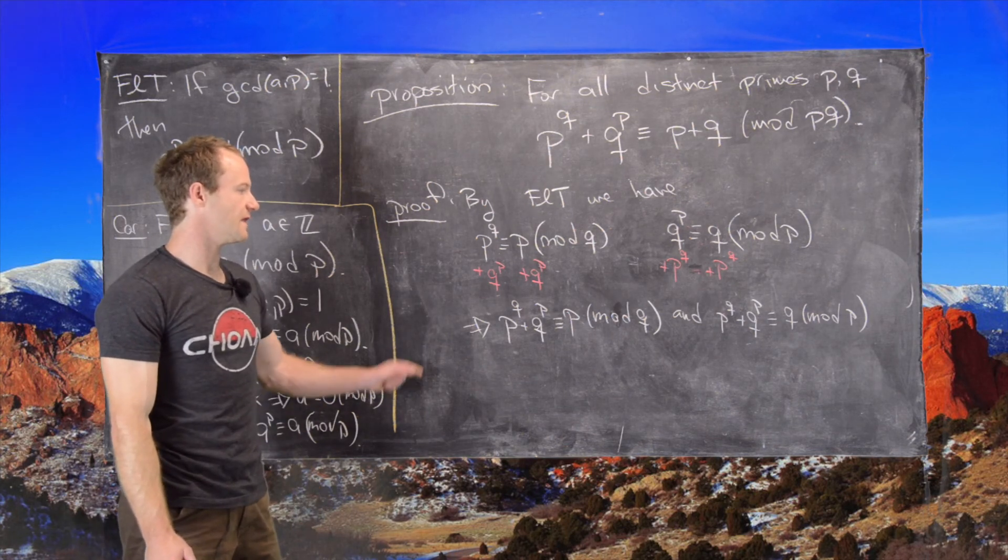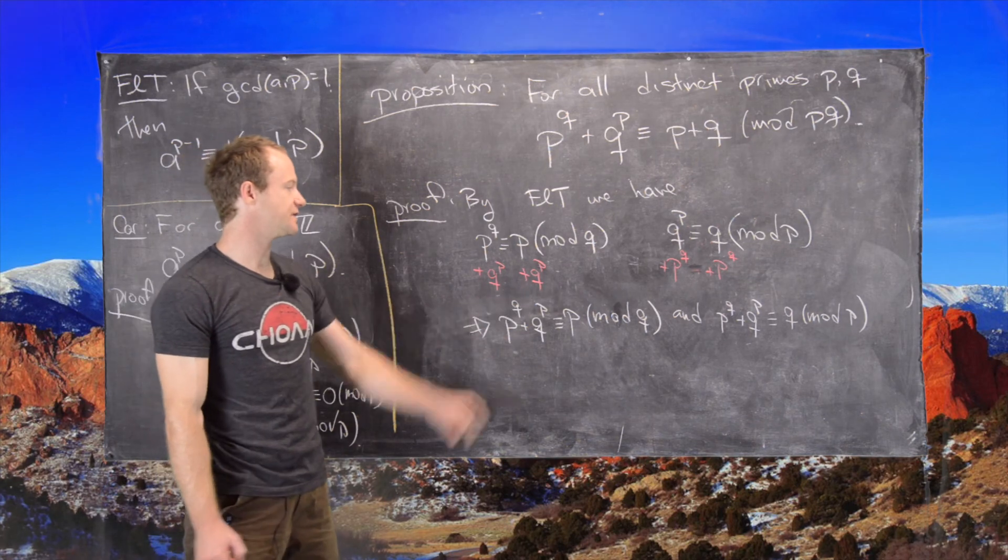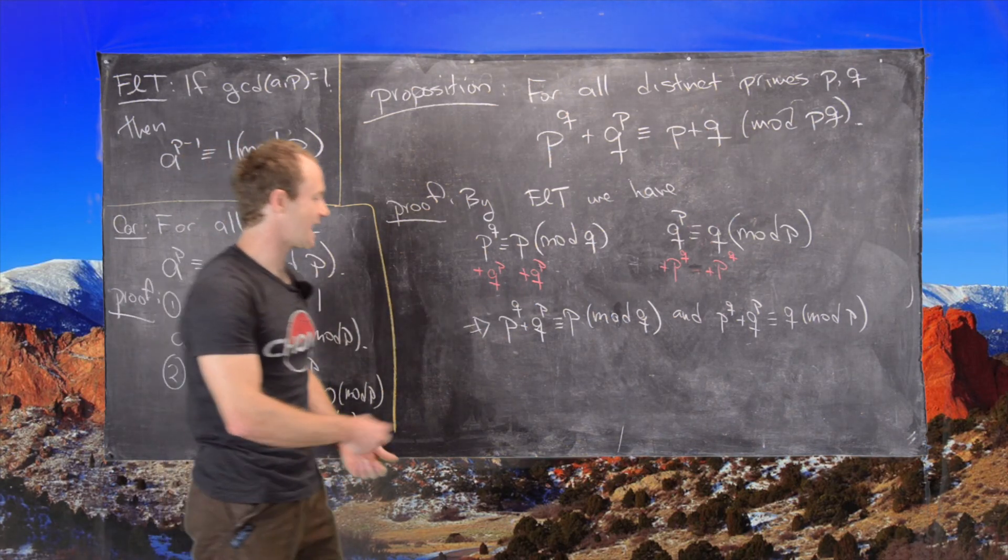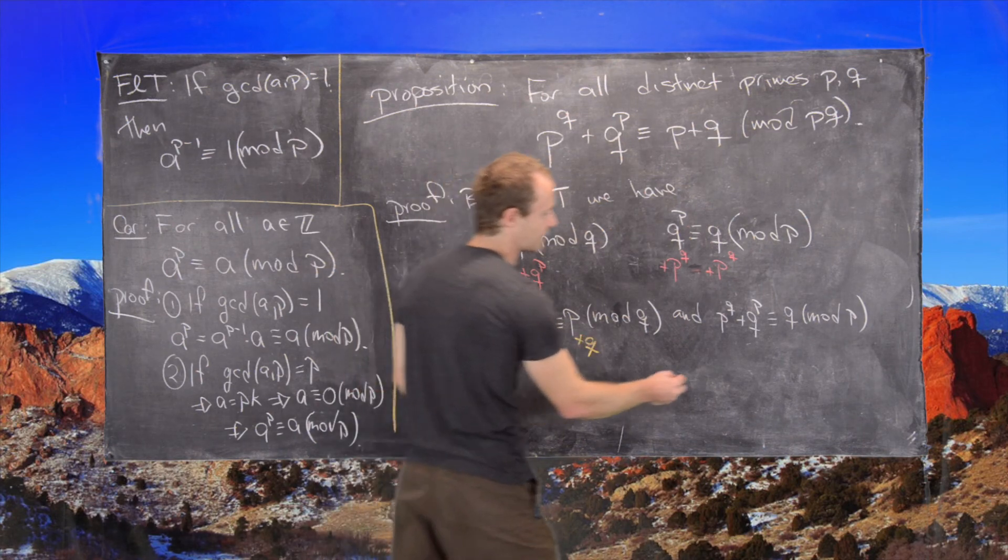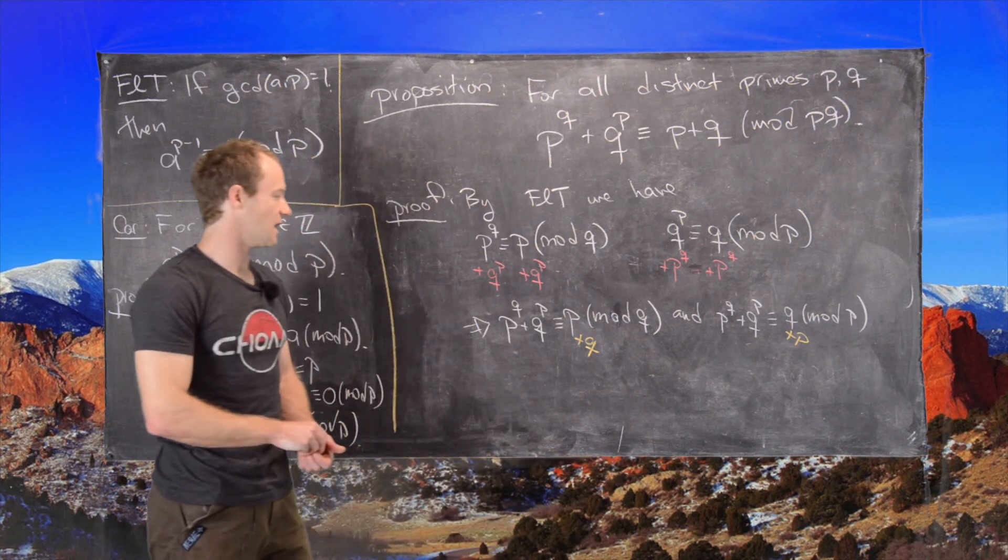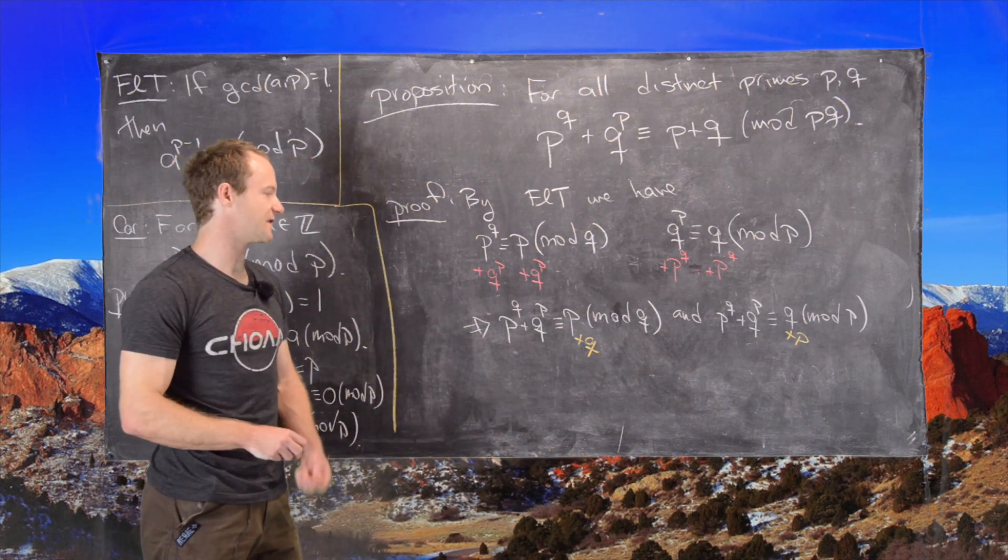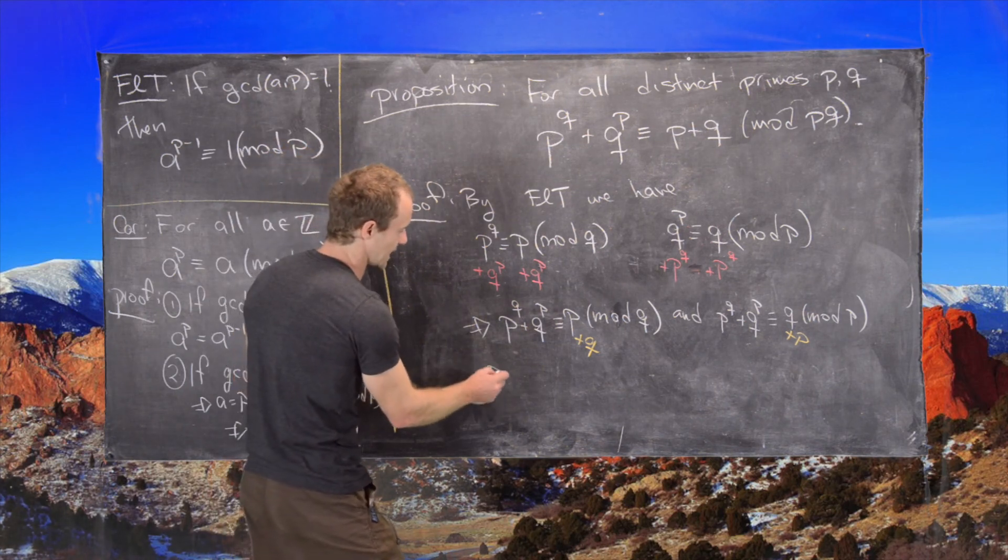But what that tells us is that we can do the same thing again. So let's add just a single copy of Q to this side and a single copy of P to this side. So now notice that's the same thing as adding 0 again. So that will give us the following.